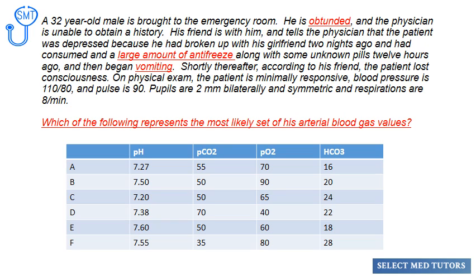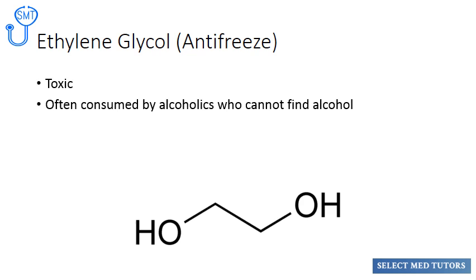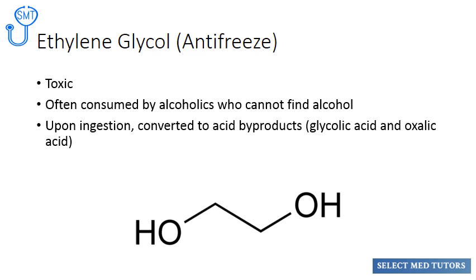What's important here? First, we note that the person is obtunded, which means that he is nearly unconscious. Next, we note that he drank a large amount of antifreeze and began vomiting. Antifreeze is ethylene glycol, which is toxic and often consumed by alcoholics who cannot find alcohol. Once ingested, it is quickly converted to acid byproducts. Despite the vomiting, we can make a reasonably educated guess that some ethylene glycol reached the circulation, leading us to believe he may have a metabolic acidosis.